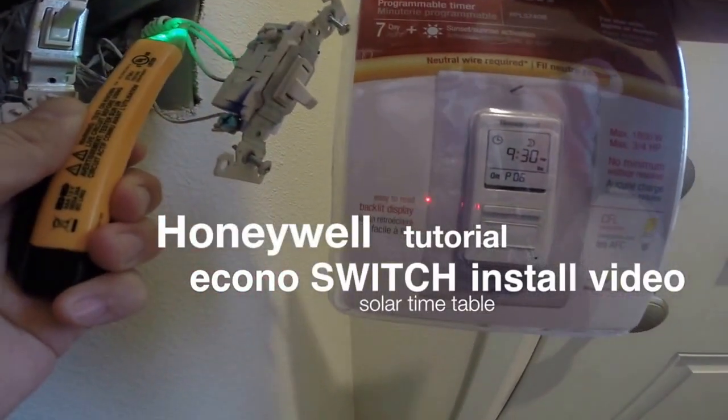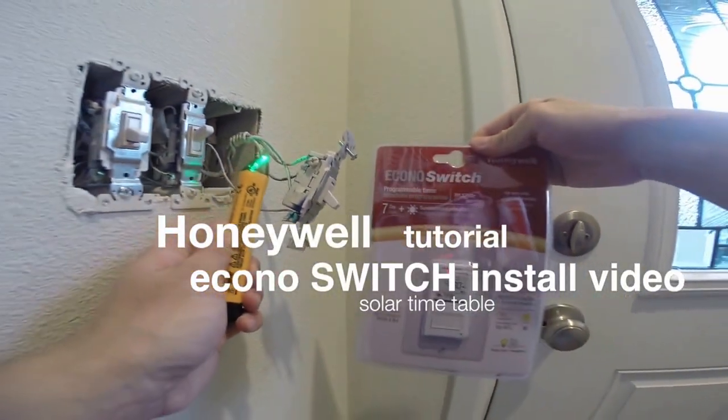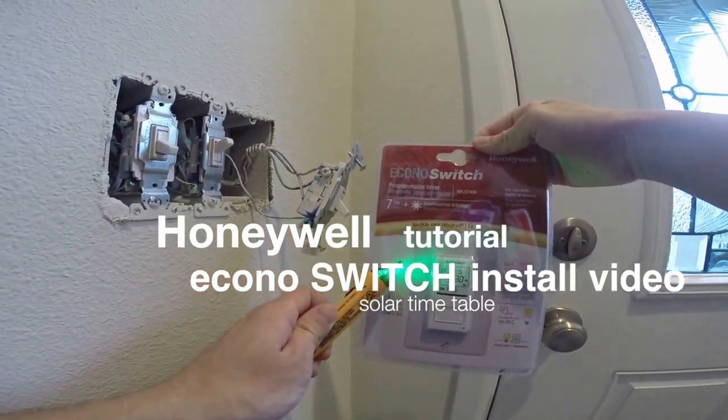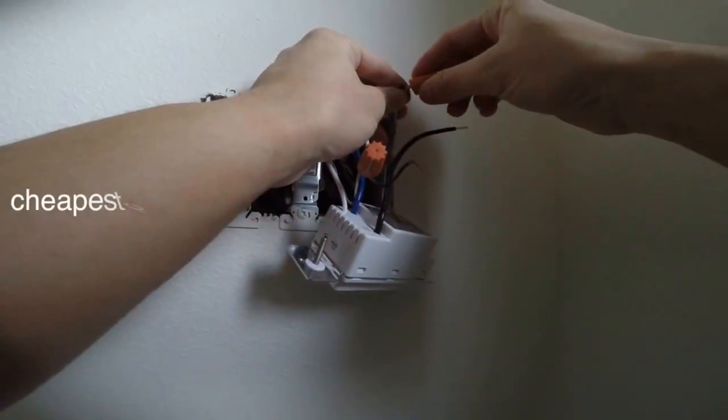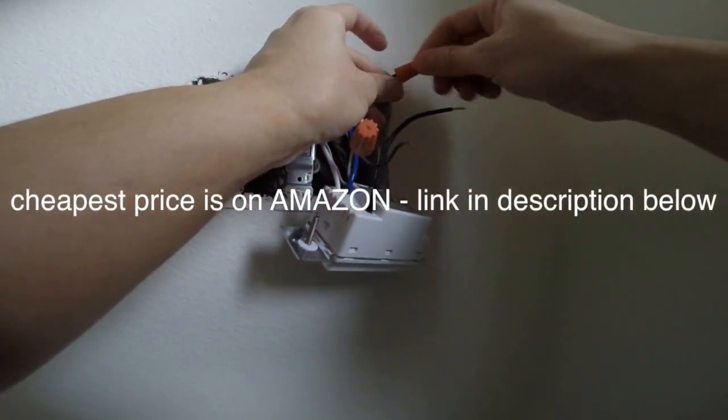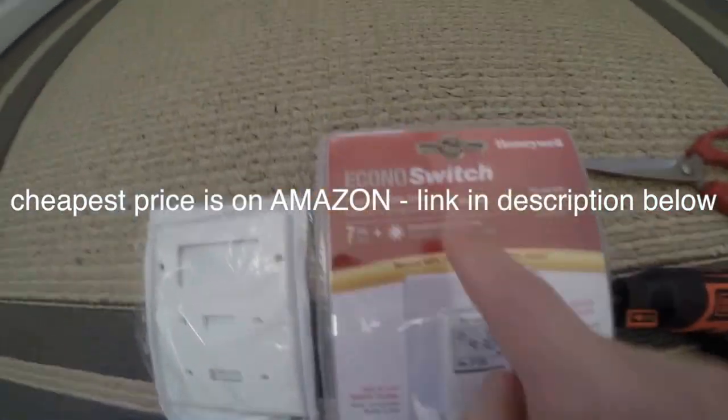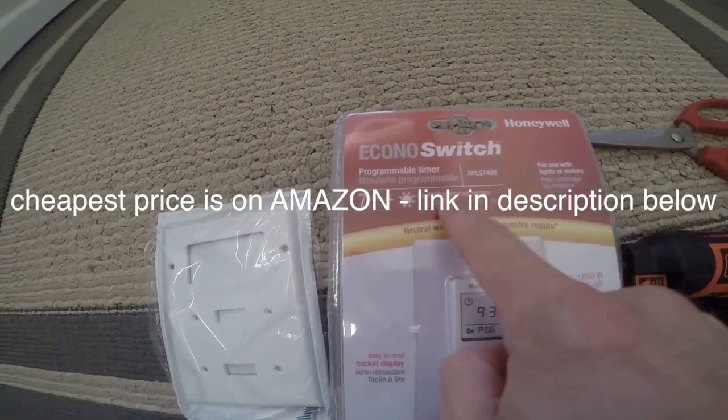Hello everyone, this is the Honeywell Econoswitch RPLS740B. It's a 7-day solar timetable switch for lights and low-powered motors, usually CFL bulbs and LED bulbs, all compatible with.